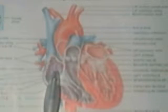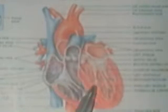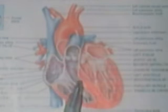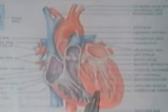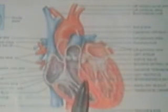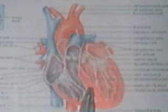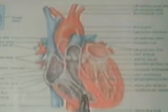The action potentials then pass along the atrioventricular bundles, which are located in the interventricular septum — the wall between the two ventricles. 'Inter' meaning between, 'ventricular' meaning between the ventricles. This other cavity is the left ventricle, and this, as you know, is the right ventricle.